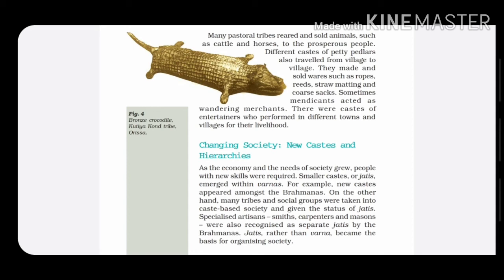Many tribal people were included in the caste-based society and were given the status of jatis. Specialized artisans like smiths — goldsmiths, blacksmiths — carpenters, and masons were all recognized as separate jatis. They were recognized as distinct jatis within the broader social system.